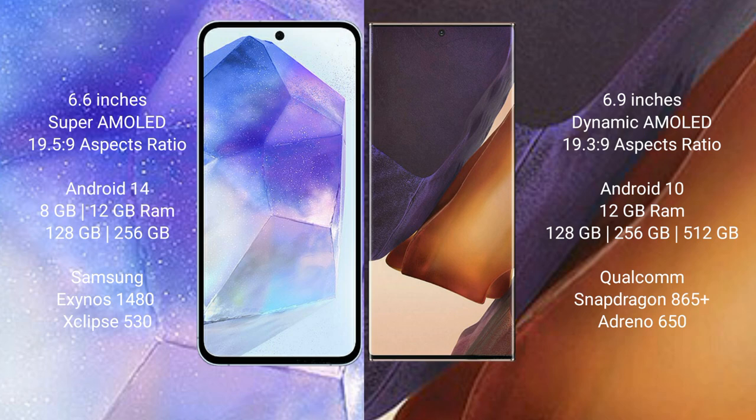Samsung Galaxy A55 comes with 8GB or 12GB RAM, 128GB or 256GB internal storage, and is powered by the Samsung Exynos 1480 processor with GPU Xclipse 530. Samsung Galaxy Note 20 Ultra comes with 8GB or 12GB RAM, 128GB, 256GB, or 512GB internal storage, and is powered by the Qualcomm Snapdragon 865 Plus processor with GPU Adreno 650.